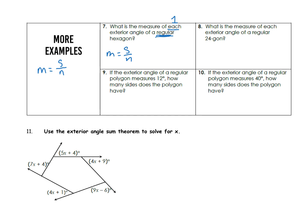There are two things to remember here: the measure is equal to the sum divided by the number of sides. We are talking about exterior angles, and the sum of the exterior angles is 360 degrees. A hexagon has six sides, so we take 360 degrees and divide it by 6 to find that the measure of one exterior angle is 60 degrees.